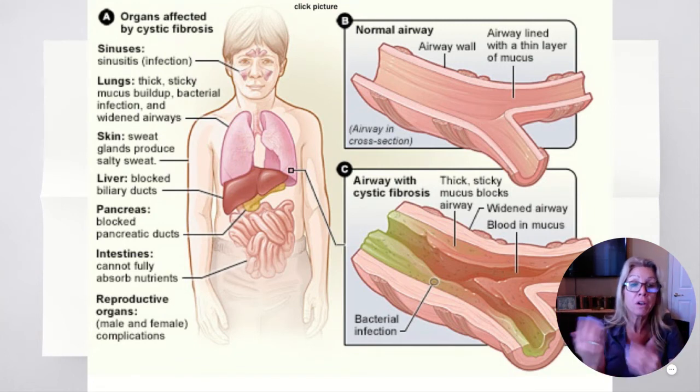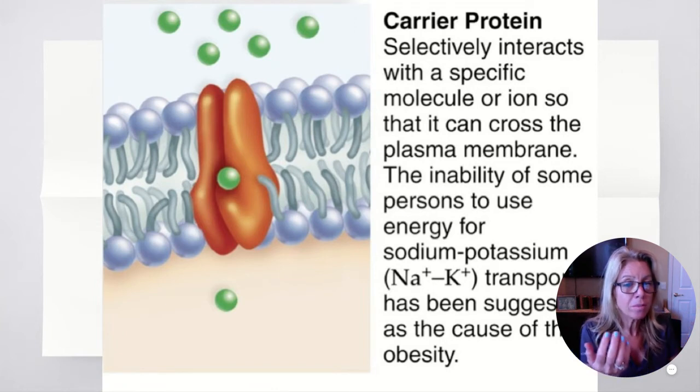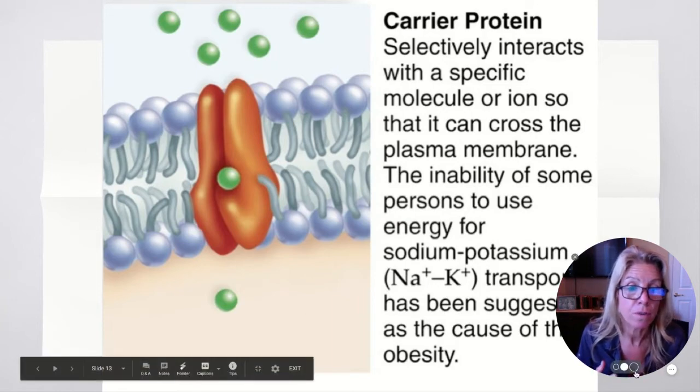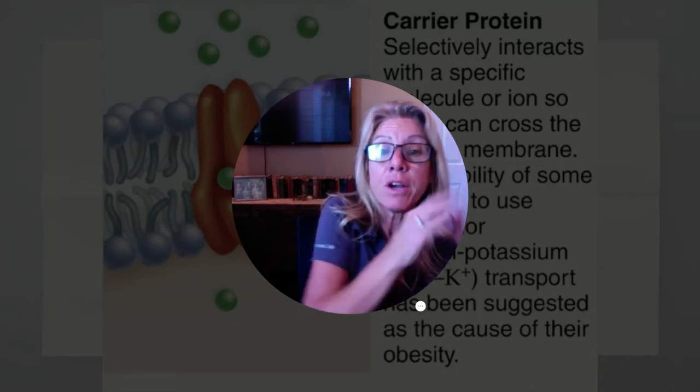Our next protein function is carriers. A channel is like somebody walking through a door freely; if somebody is going to carry you, they have to come in contact with you. Carriers can be involved in both passive transport and active transport. Active transport requires energy or ATP to move a substance against the gradient. Carriers can be used passively — going with the gradient from higher to lower concentration — or actively from lower to higher concentration. When they do that actively, they are called pumps.